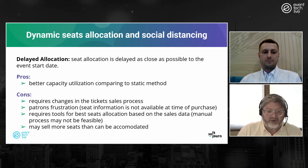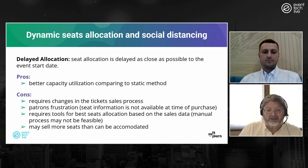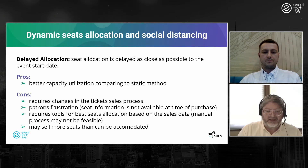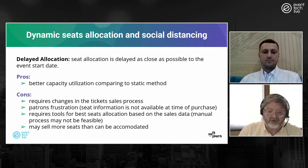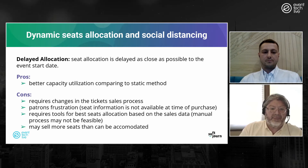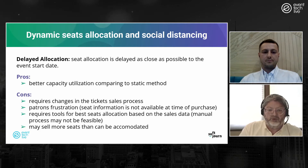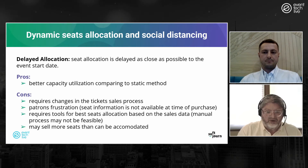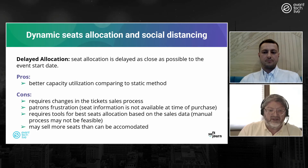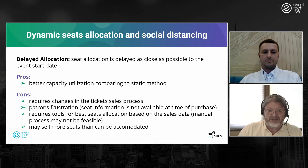The cons of delayed dynamic allocation are that it requires changes to how you do ticket sales, and patrons may not know exactly where they'll be sitting — they might be given a general area. It requires tools and data built into the ticketing system to run the algorithm. It's not easy to do manually. There's also a risk of selling more seats than you can actually accommodate.